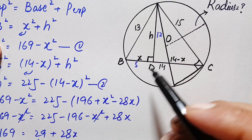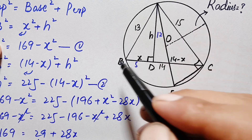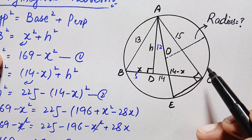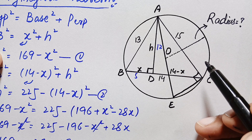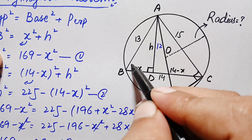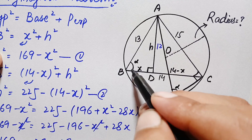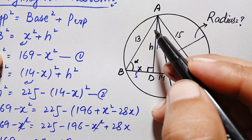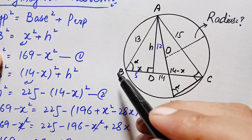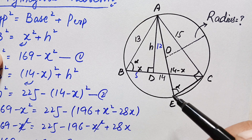Looking at triangle ABD, if we extend its side we get line ABC. Now triangles ABC and AEC share the same arc, and we know that angles subtended by the same arc are always equal. So this angle and the corresponding angle are both subtended by the same arc, making them equal — let us call them angle alpha. Since two angles are the same in both triangles, the third angle is also the same, making triangles ABD and AEC similar triangles.